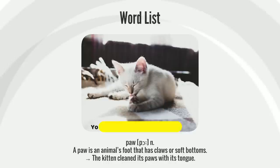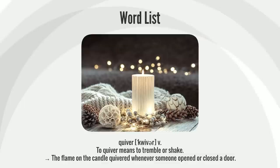A paw is an animal's foot that has claws or soft bottoms. The kitten cleaned its paws with its tongue.